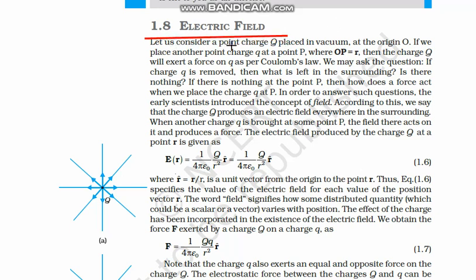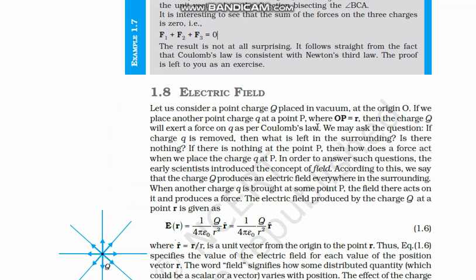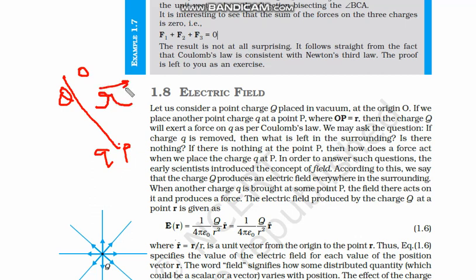Let us consider a point charge Q placed in vacuum at the origin. What is electric field? If we place another charge, small q, at point P, where OP is equal to r — so charge Q is at the origin and small q is at point P — then OP equals r. Remember, this r is not a unit vector.